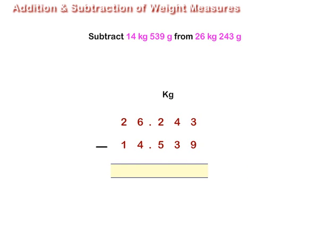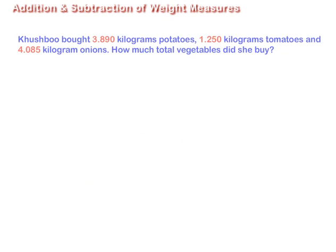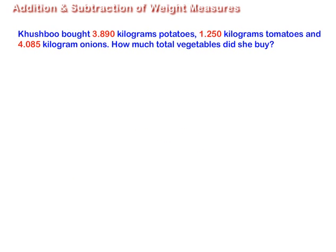Arrange the numbers as shown, decompose and subtract. The difference of the two numbers is equal to 11.704 kilograms, or 11 kg 704 grams.